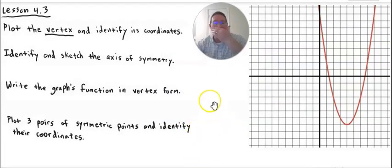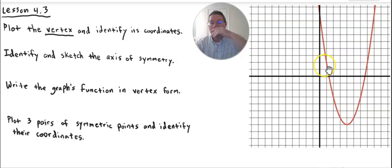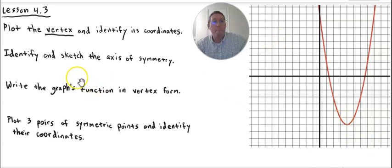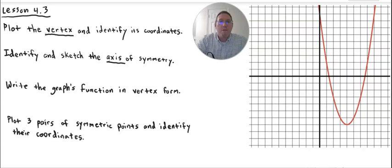Here are the things you're going to be asked to do in the lesson sheet for 4.3. Given a graph, I'm going to want you to plot what's called the vertex of the graph and identify its coordinates. The vertex is the turnaround point — it's either the lowest point or the highest point. Then the second thing is to identify and sketch what's called the axis of symmetry.